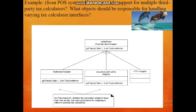The next slide is an example from a POS system: how to provide support for multiple third-party tax calculators, and what objects should be responsible for handling varying tax calculator interfaces. Here we have a TaxCalculatorAdapter with multiple tax calculator adapters — this is polymorphism. They are similar but vary in behavior for adapting to different external tax calculators.